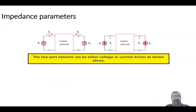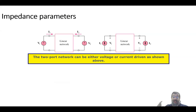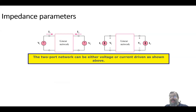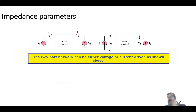We have two terminals on the right and two terminals on the left — that's the two-port network. This can be voltage-driven or current-driven; it doesn't really matter. But the whole circuit is dealt with as a black box, and the relationship between v1, i1, v2, and i2...